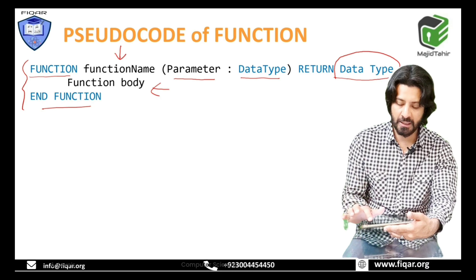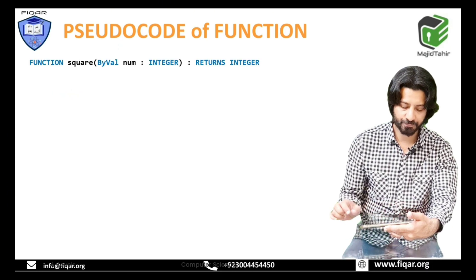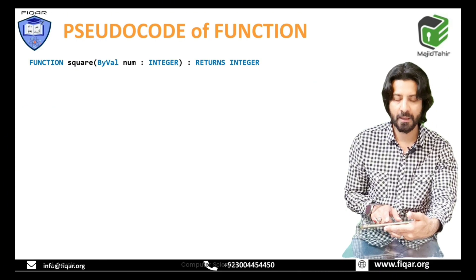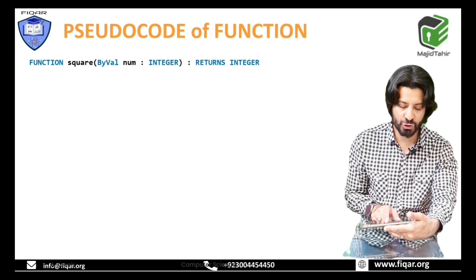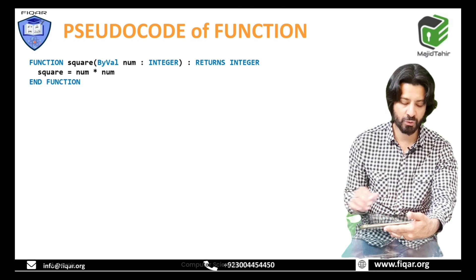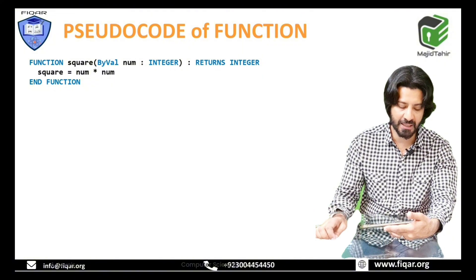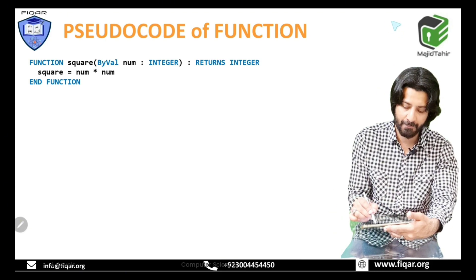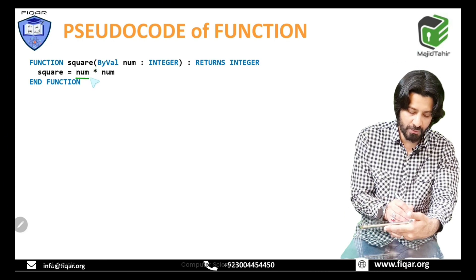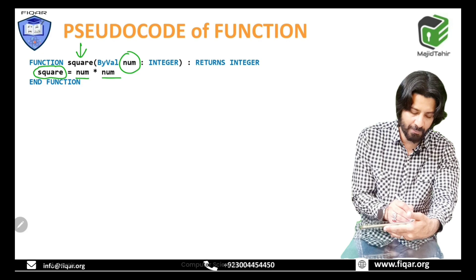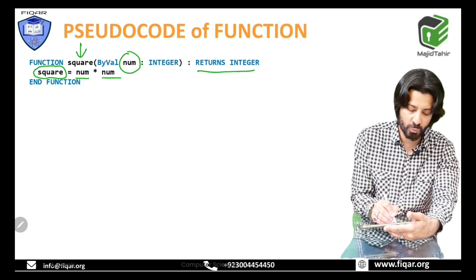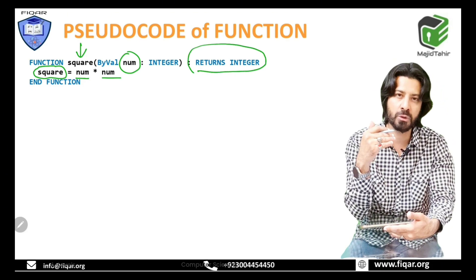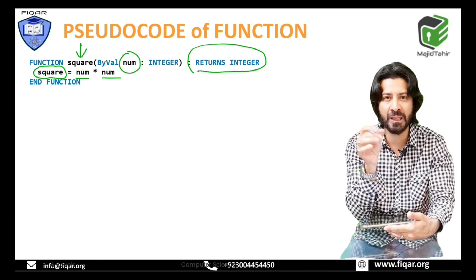Let's look at a pseudocode example. We define a function called 'square' — by val num as integer, returns integer. Inside, square is equal to num times num. The important thing to note here is that we are not assigning a value to a separate variable; num is the parameter being multiplied by itself, and the result is stored in 'square', which is the function name.